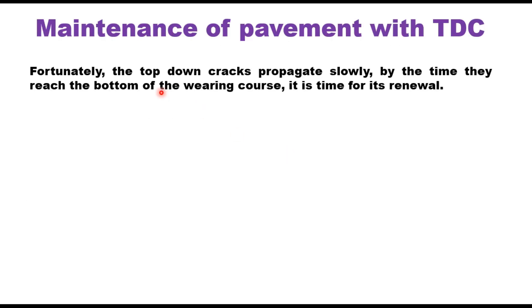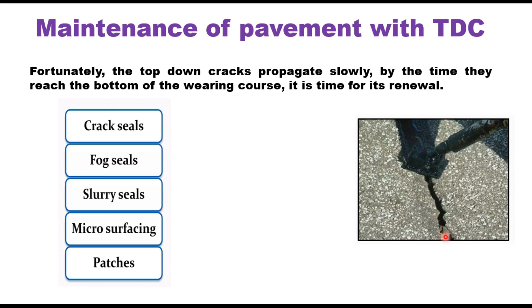Fortunately, top-down cracks propagate very slowly, and by the time they reach the bottom of the wearing course, it is time for its renewal. It takes about 10 years for a top-down crack to reach the full depth of the wearing course. Therefore, these cracks can be remedied through crack sealing, fog seal, slurry seal, or microsurfacing. If there is a large area cracked, patch repair work can also be done.